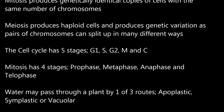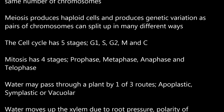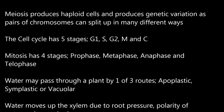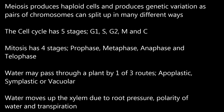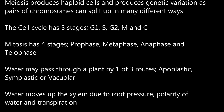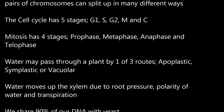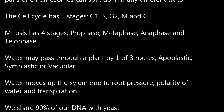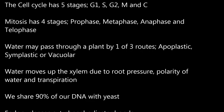The cell cycle has five stages: G1, S, G2, M, and C. Mitosis has four stages: prophase, metaphase, anaphase, and telophase.